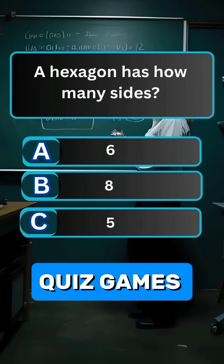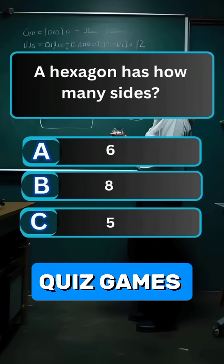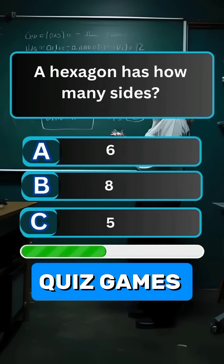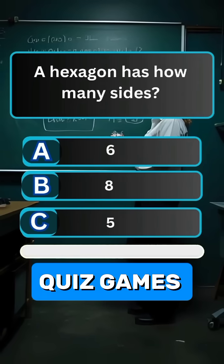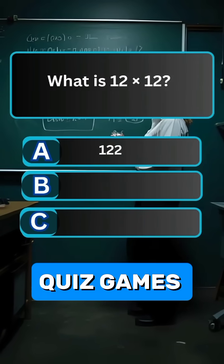Question 7. A hexagon has how many sides? Answer A. 6.